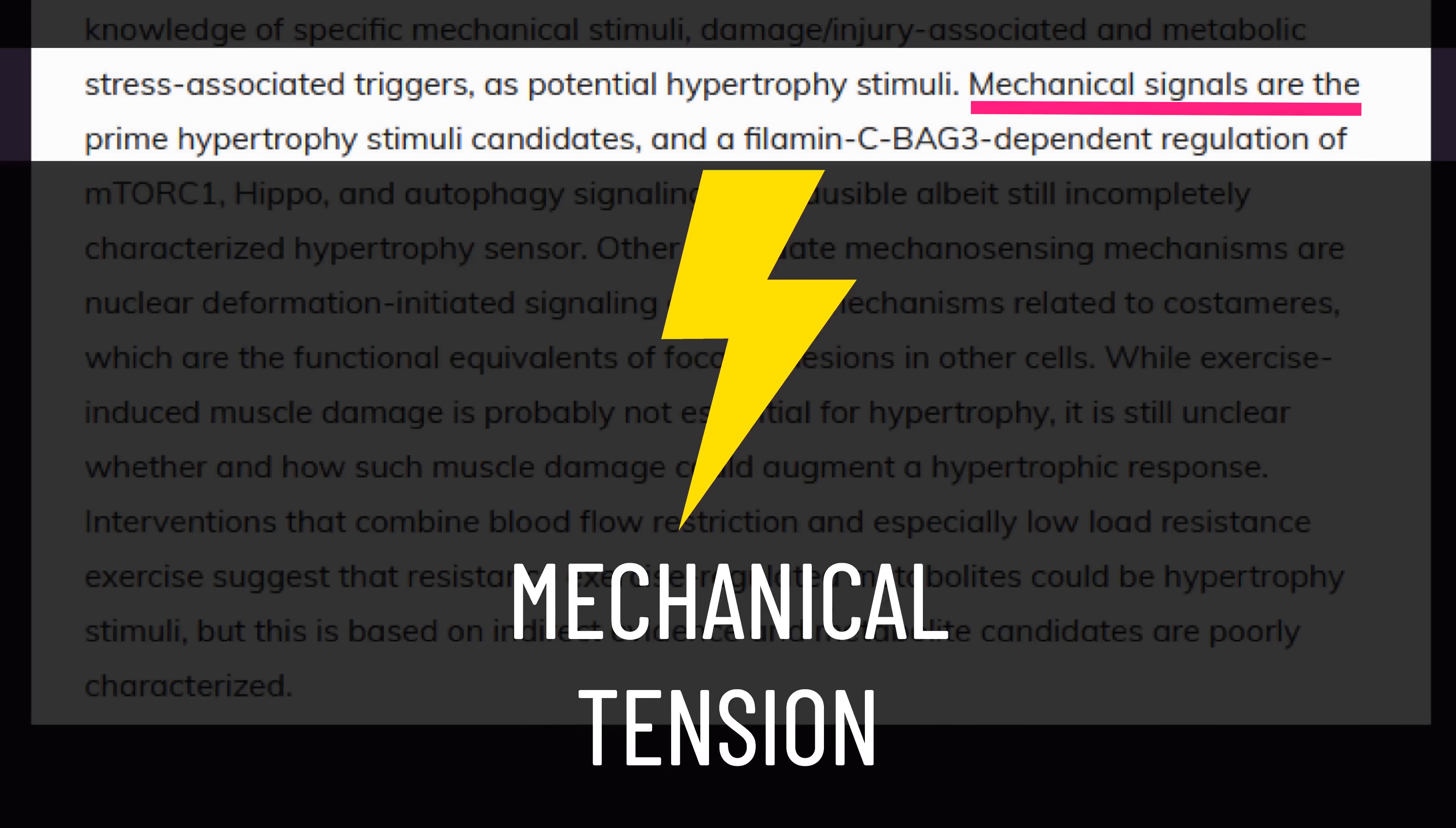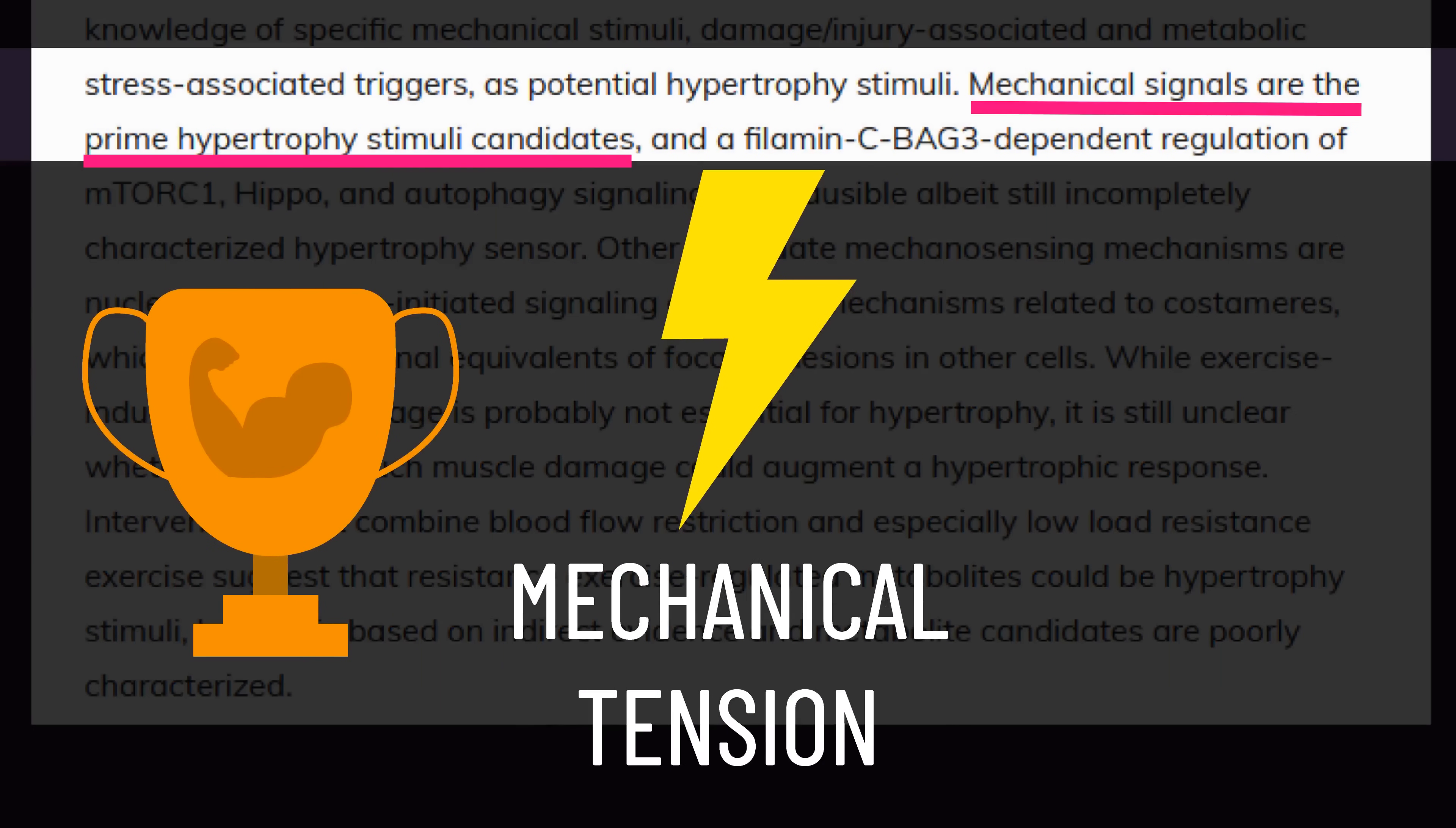Mechanical tension is likely the primary hypertrophy stimulus. Muscle fibers contain mechanosensors that can detect tension and then convert this tension into a signaling event that leads to myofibrillar protein synthesis increases. Thus,